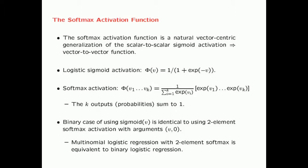How does the softmax activation function relate to the sigmoid? The binary case of using sigmoid(v) is identical to using the two-element softmax activation with arguments v and 0. I will leave this as an exercise for you — it is relatively easy to show. What this also means is that multinomial logistic regression with a two-element softmax is equivalent to binary logistic regression.